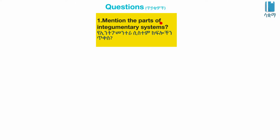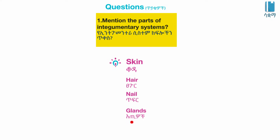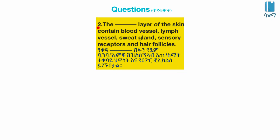Mention the parts of the integumentary system. The skin, the hair, the nail, and the glands are the parts of the integumentary system.